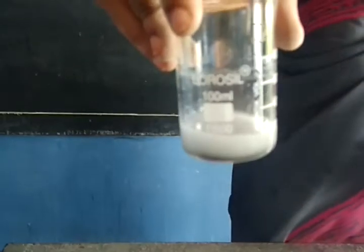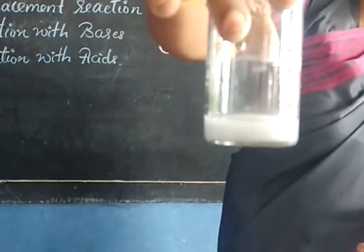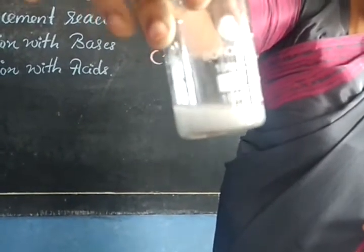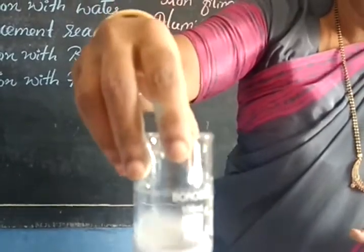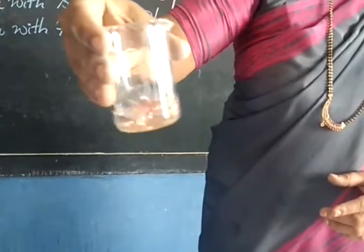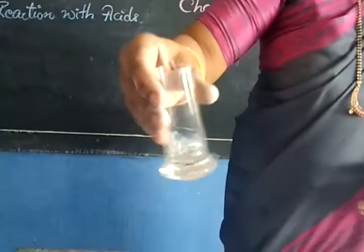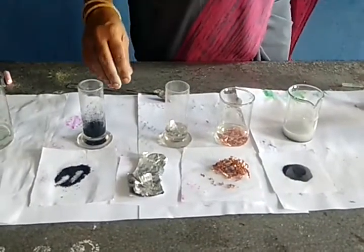You can see the formation of bubbles, showing that the metal is reacting with the acid. Very fine bubbles are coming with a hissing sound. Children, record your observation — when acid is added to the iron filings, bubbles are released. With copper also, many bubbles are getting released, showing that copper, being a metal, is also reacting. But charcoal, being a non-metal, is not reacting with the acid. This shows that metals react with acids, while non-metals are non-reactive with acid.